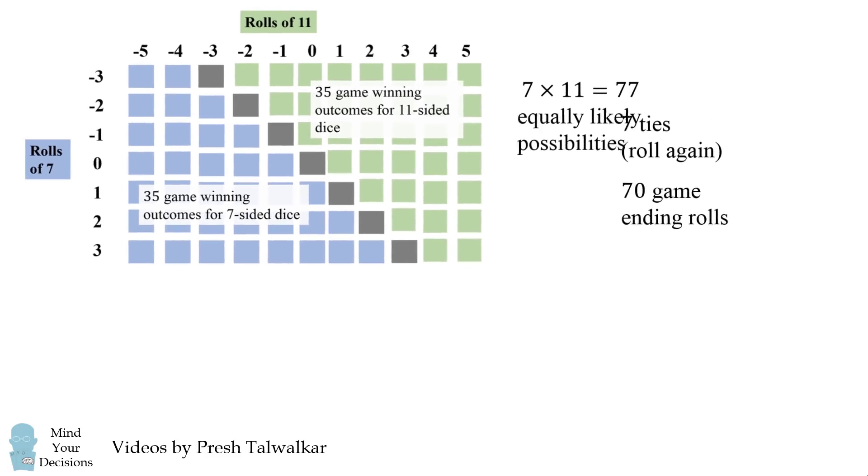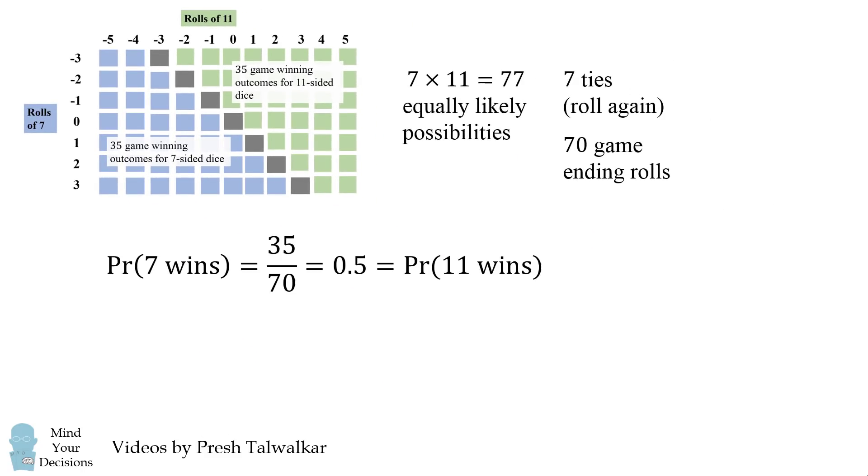So, we'll put this together. The probability that seven wins will be its 35 game-winning outcomes divided by the 70 outcomes in which the game ends,